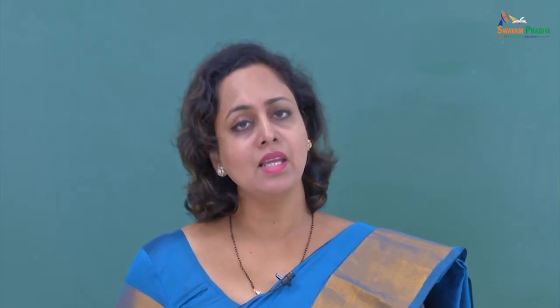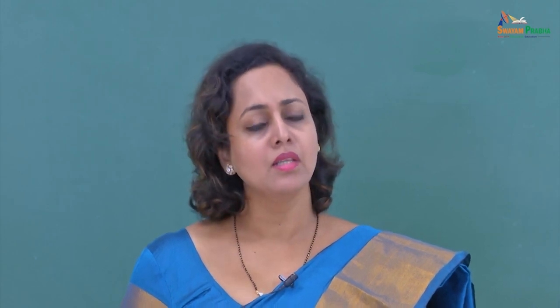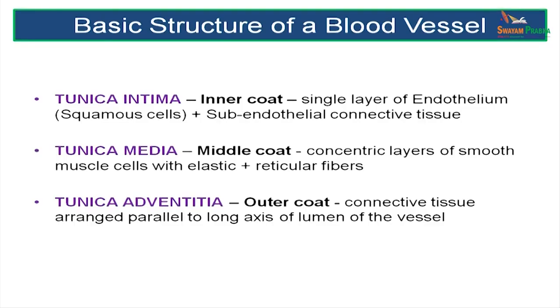The tunica intima is the innermost covering, made up of a single layer of endothelial squamous cells, a basal lamina, and an internal elastic lamina. The tunica media is muscular and elastic, and the tunica adventitia is made up of collagen fibers and is the outermost covering.